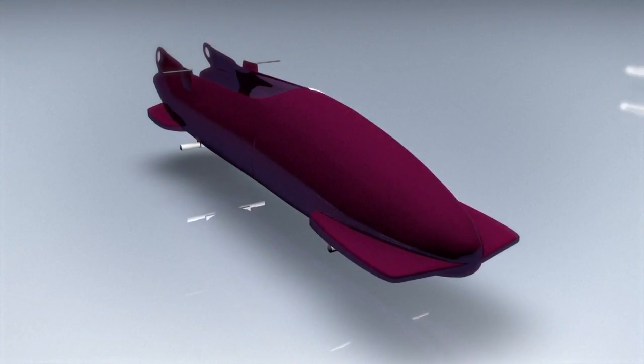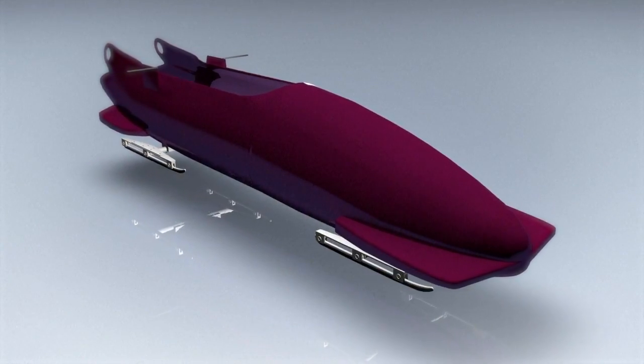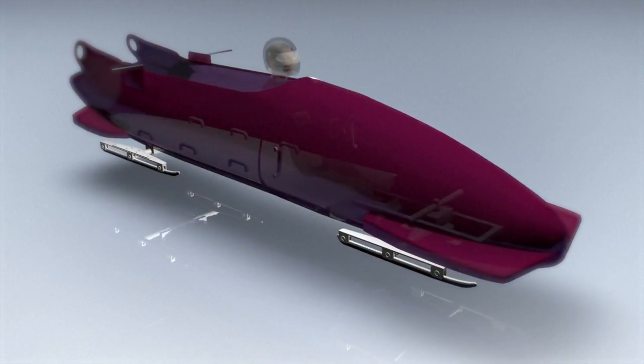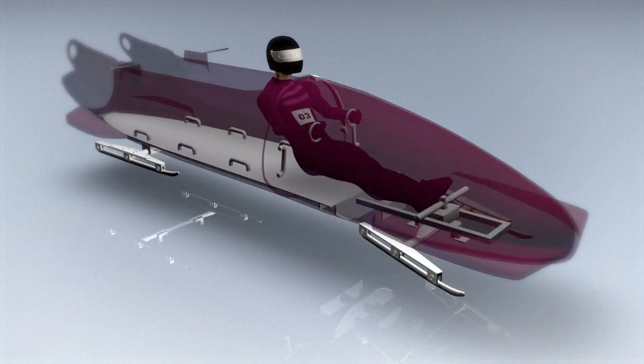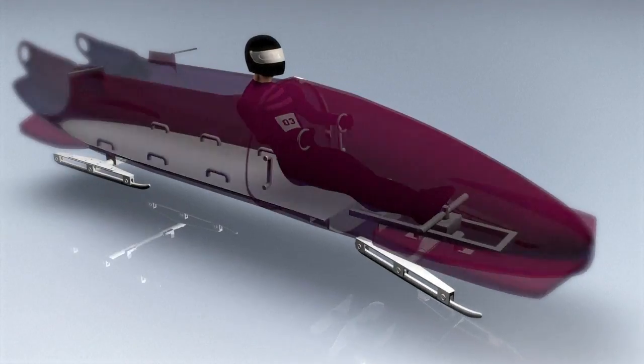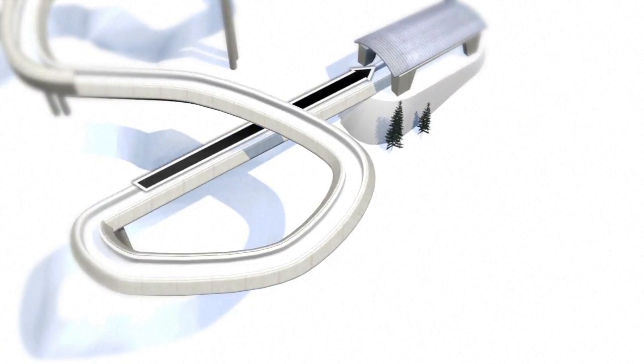The bob is a toboggan with an aerodynamic shell. It's equipped with two sets of independent steel runners. The pilot steers the front set with two handles. The brake is at the rear of the sled and is used after the bobsleigh has passed the finish line.